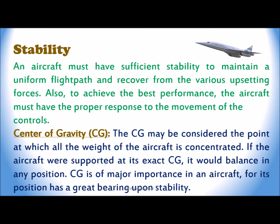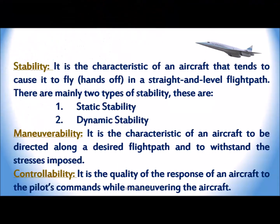Center of gravity (CG): The CG may be considered the point at which all the weight of the aircraft is concentrated. If the aircraft were supported at its exact CG, it would balance in any position. CG is of major importance in an aircraft, for its position has a great bearing upon stability. Stability is the characteristic of an aircraft that tends to cause it to fly hands-off in a straight and level flight path.